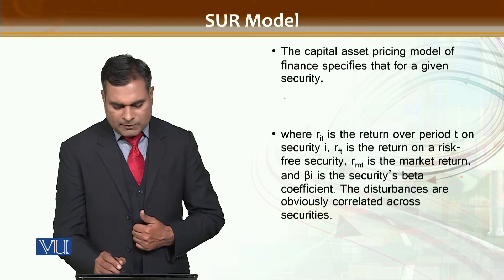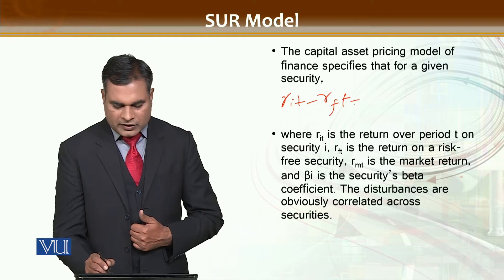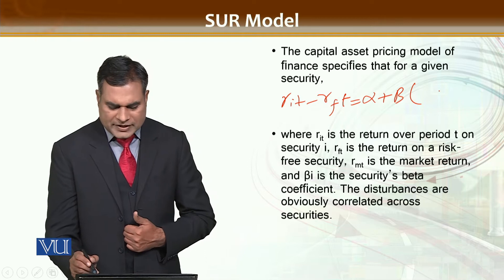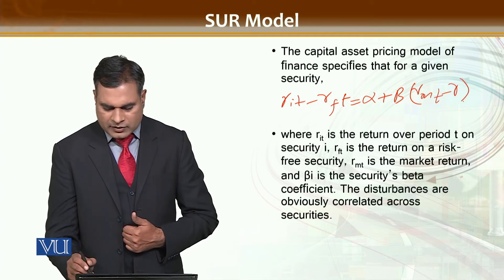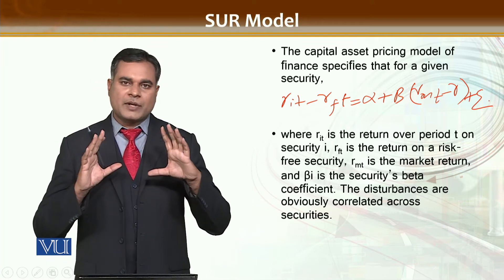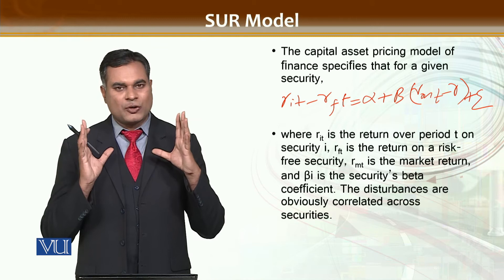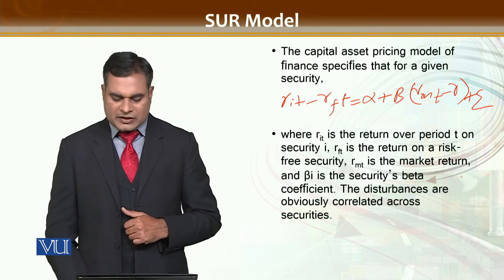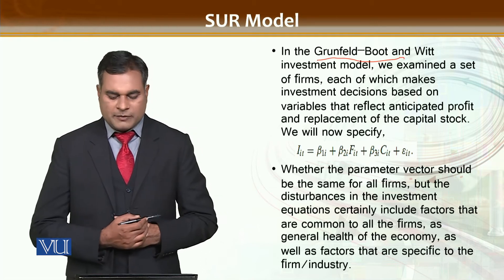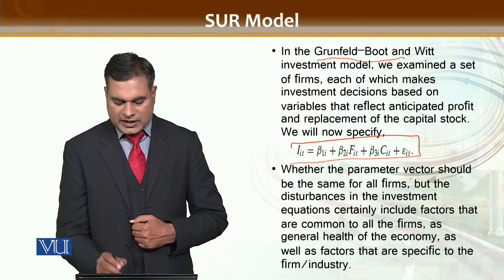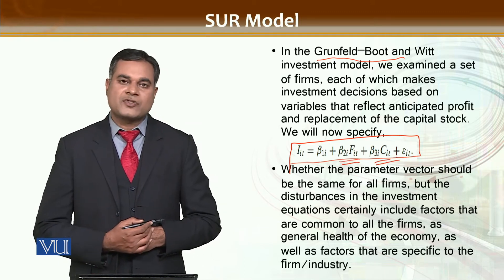In simple regression, RIT minus return on risk-free securities is equal to alpha plus beta, plus the error term. This means that your return depends on your investment rates, the environment of the economy, or the structure of the banking system. This type of regression includes the very prominent Grunfeld model, in which investment depends on the profit rate and capital stock of your firm.